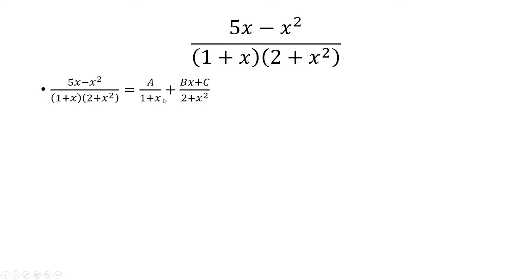Now if I set 1 plus x equal to 0, I get x equals negative 1, and so I'm going to put A for that. But when I set 2 plus x squared equal to 0, I get x squared is negative 2, which is not possible for any real number. So that's why I have Bx plus C.